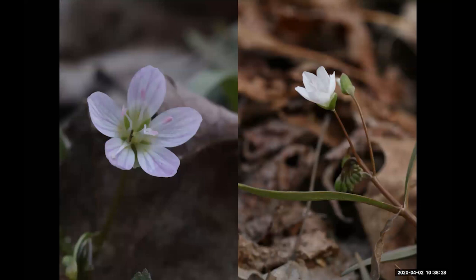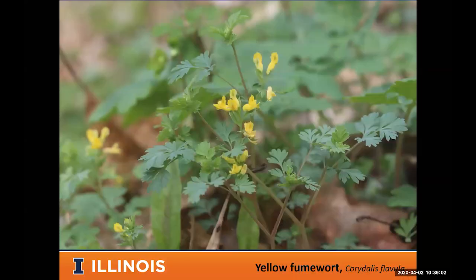Spring beauty varies in color from almost pure white to almost red — most of the time you'll see some pink streaking on the petals. It has long, thin leaves, so when it's not blooming people often mistake it for grass. When it's flowering, it's really unmistakable — that flower with little pink veins in the petals is unique.